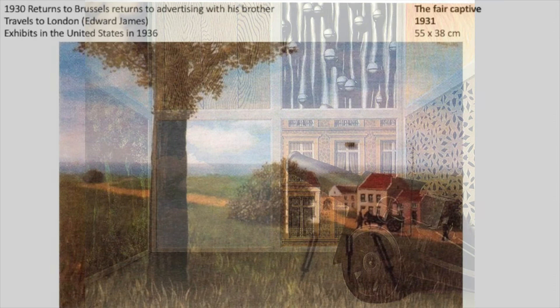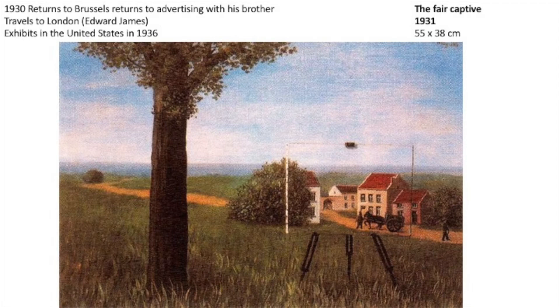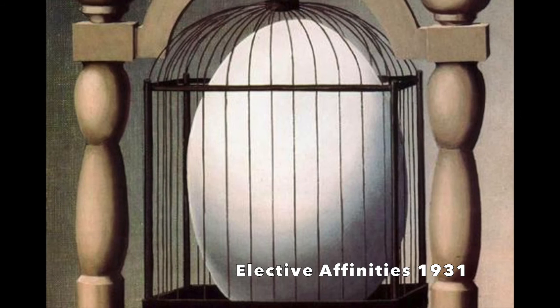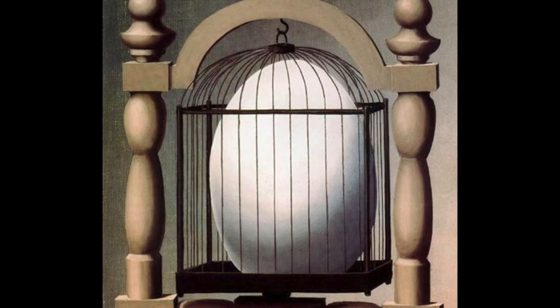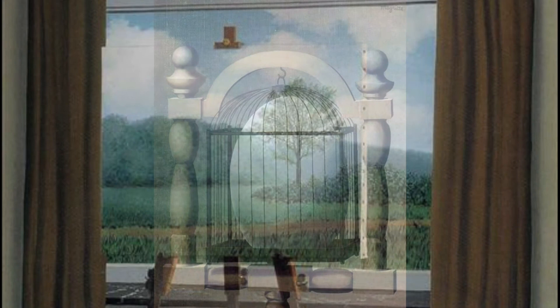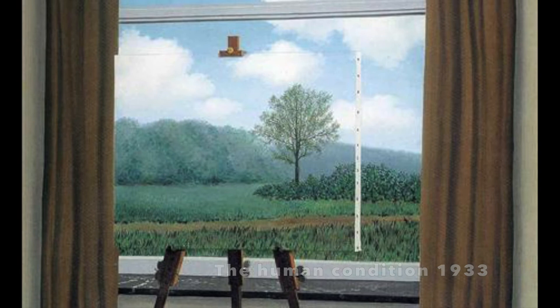He was not really achieving financial success in Paris, so in 1930 he returns to Brussels and continues his advertising work. For a short while he will travel to London and live with Edward James, and he started to receive some notoriety. By 1936 he has his first exhibition in the United States at the Julian Levy Gallery. I see another evolution in his work when he returns to Brussels — where before the object was alone or the focus like the pipe, now it becomes a transformative part of the space it occupies. A wonderful example is The Human Condition from 1933.